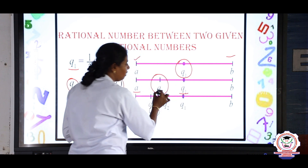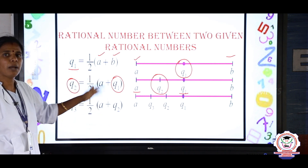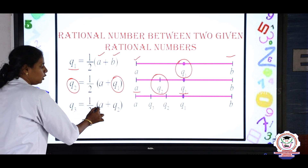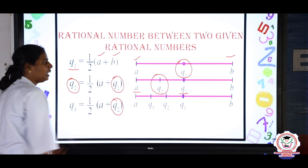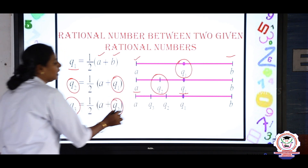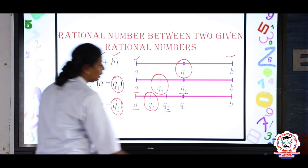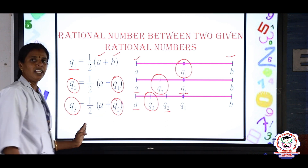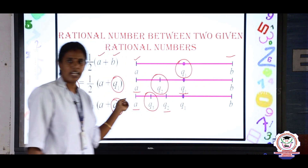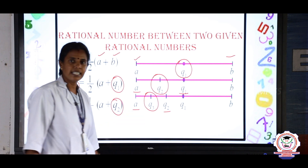For Q2, the second rational number, we use the same formula 1/2 × (A + B), but instead of B we take Q1. So Q2 will lie between A and Q1. Similarly, for Q3, instead of B we take Q2, so Q3 will lie between A and Q2. Likewise, we can find an infinite number of rational numbers between any 2 rational numbers. Using this formula we are going to solve the exercise problems.